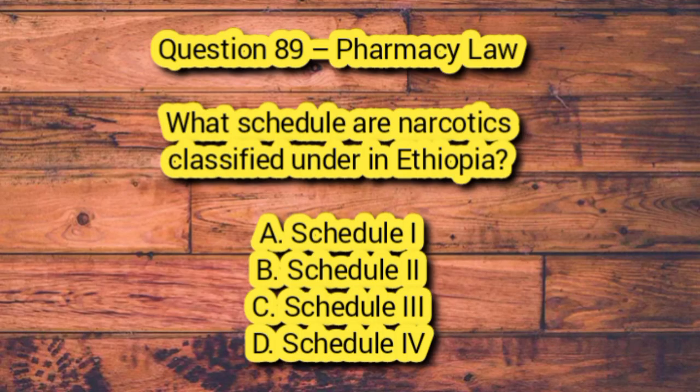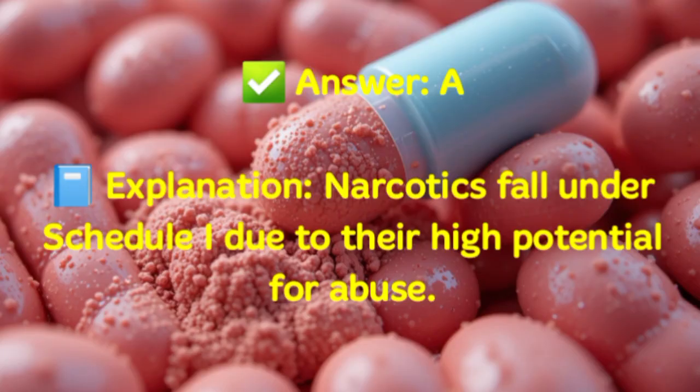Question 89 – Pharmacy Law. What schedule are narcotics classified under in Ethiopia? A. Schedule 1. B. Schedule 2. C. Schedule 3. D. Schedule 4. Answer: A. Explanation: Narcotics fall under Schedule 1 due to their high potential for abuse.